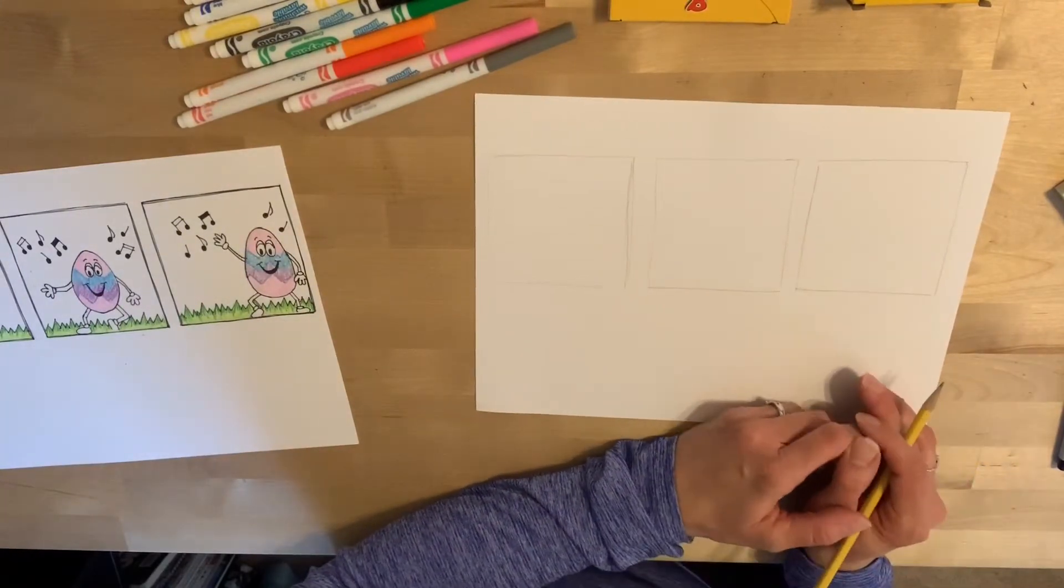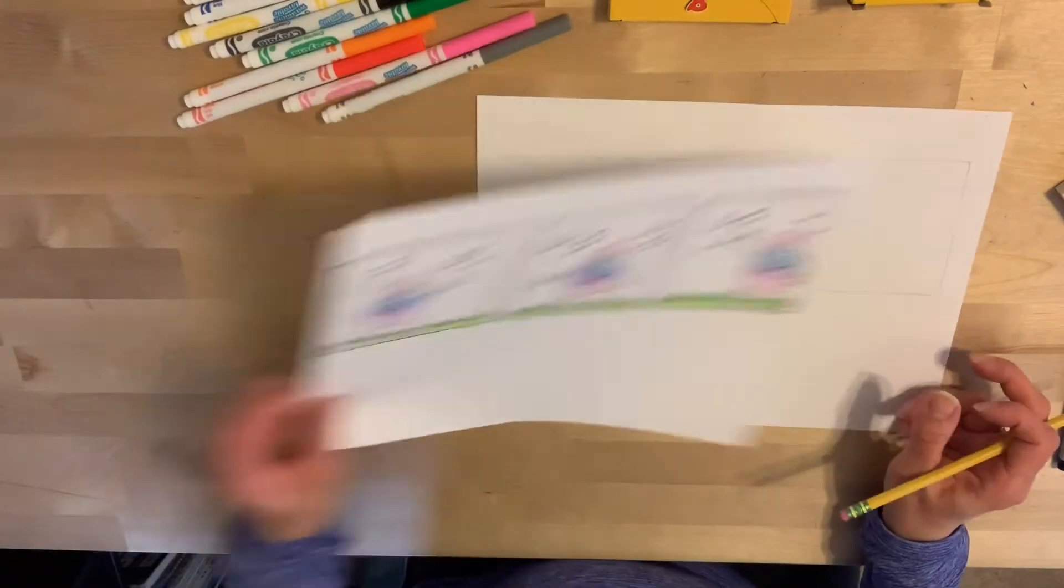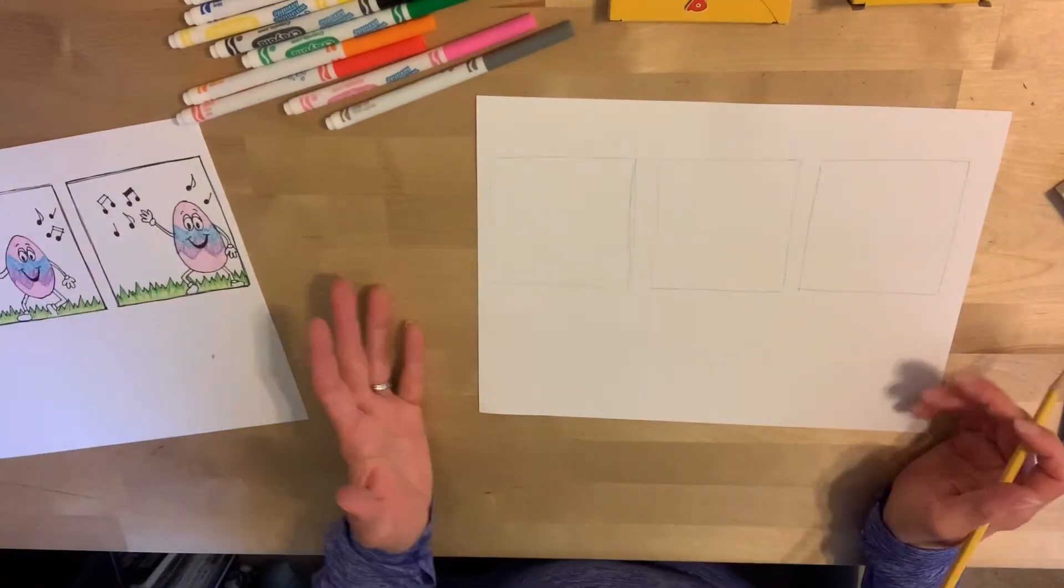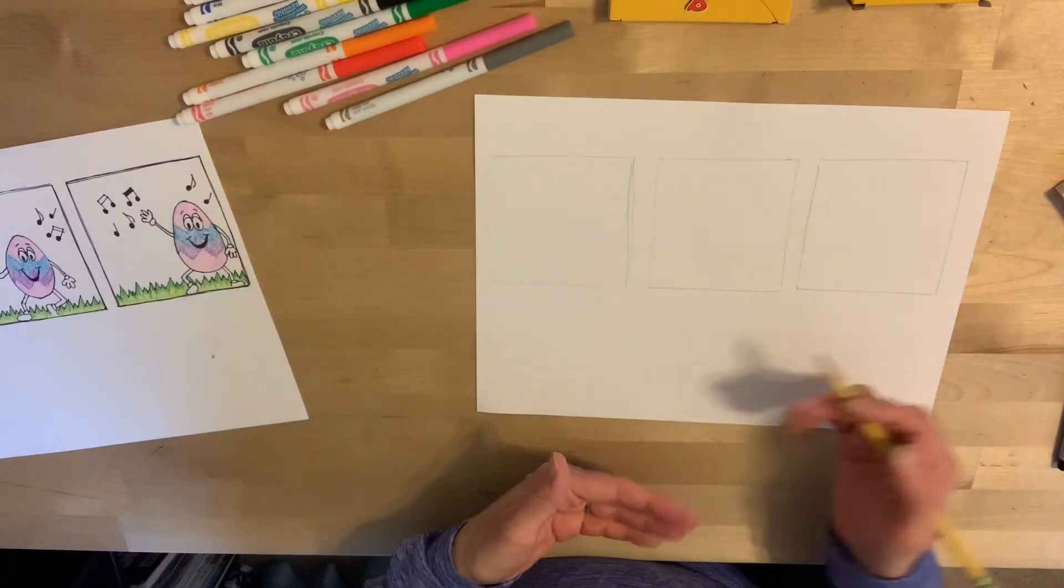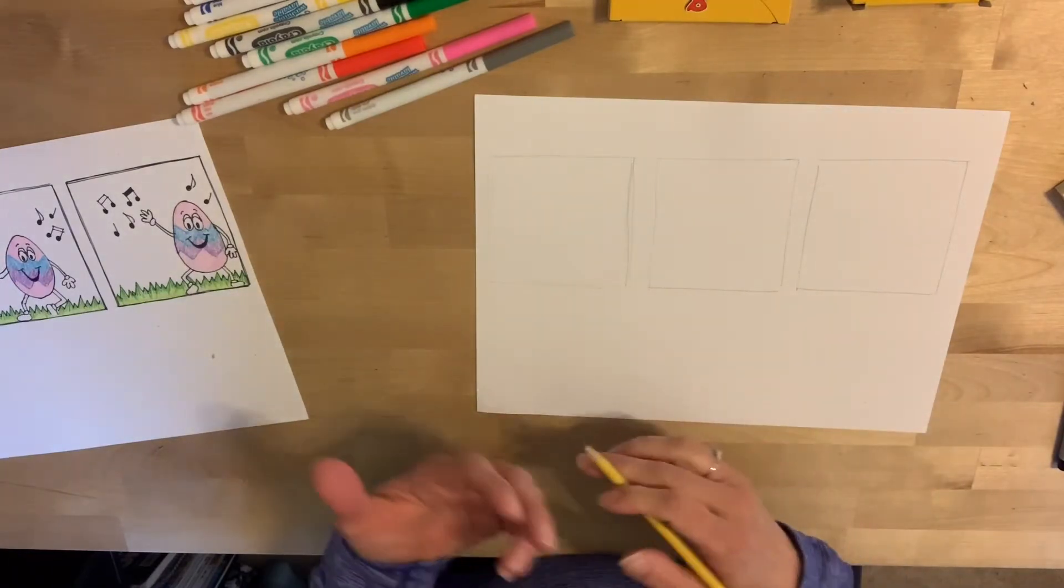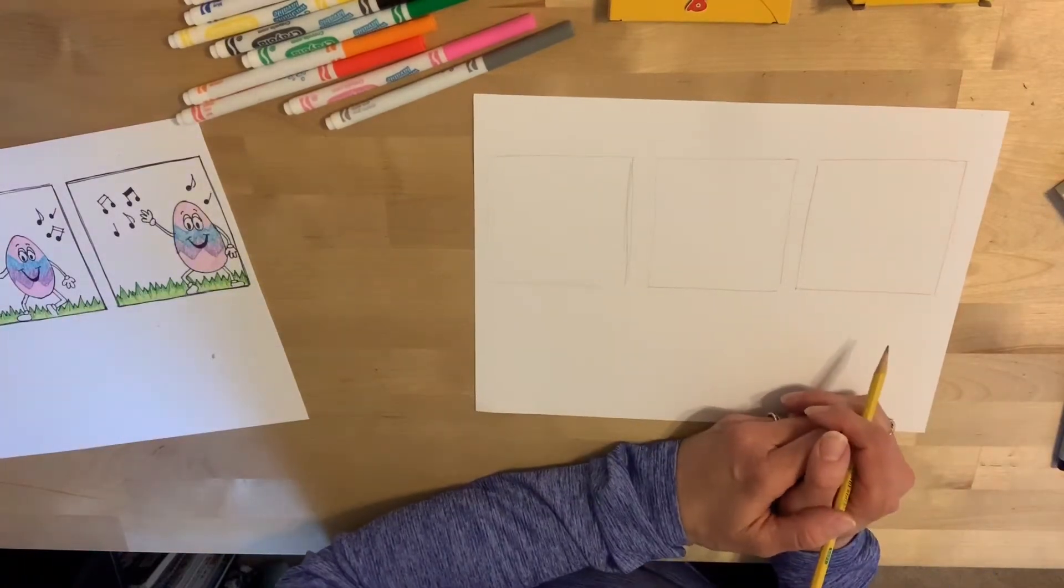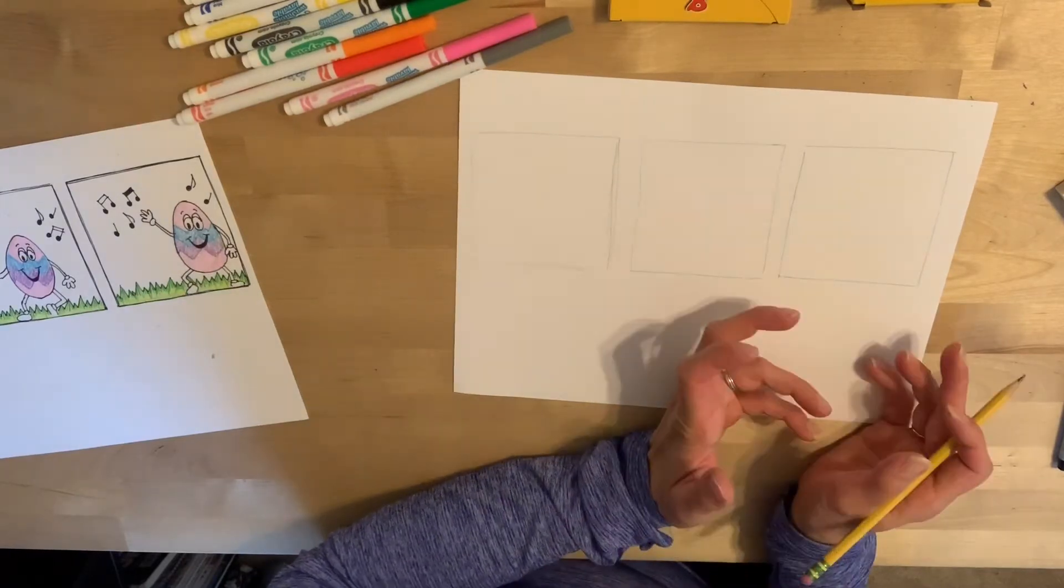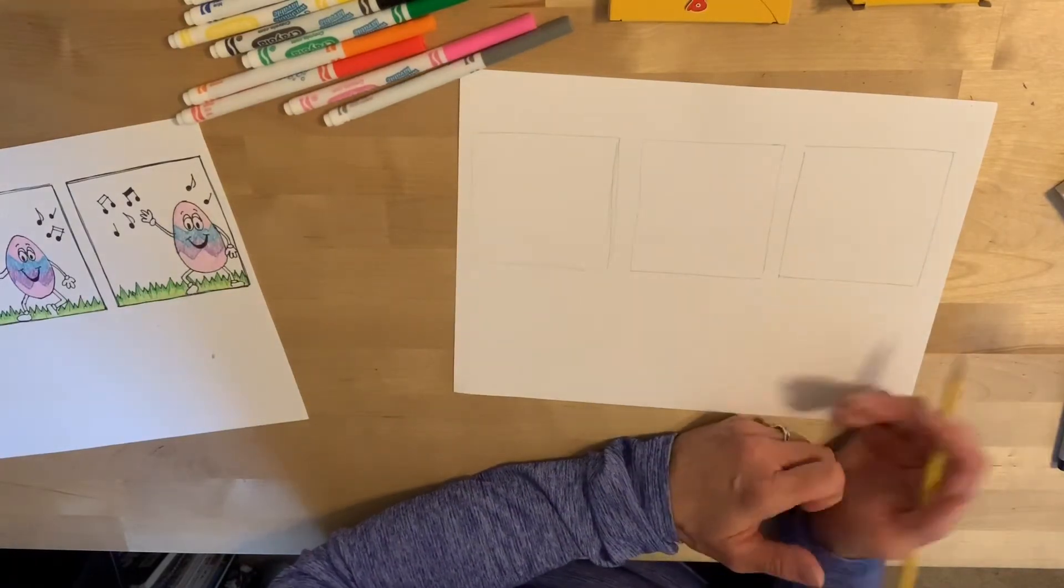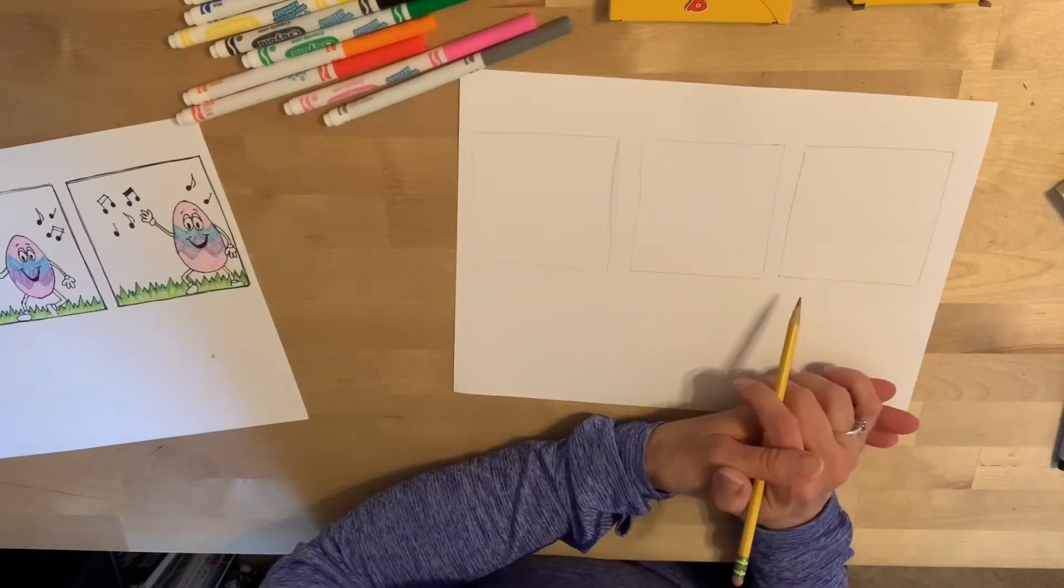I would recommend choosing something pretty simple. I did a dancing Easter egg. Maybe you want to do a basketball that's jumping into a net, or a flower walking across each square, a car moving, a butterfly flying. Think of something pretty simple. You will see that I did include some pages for you to learn how to make a superhero, if you want to do something like a superhero flying. So think of something fairly simple.